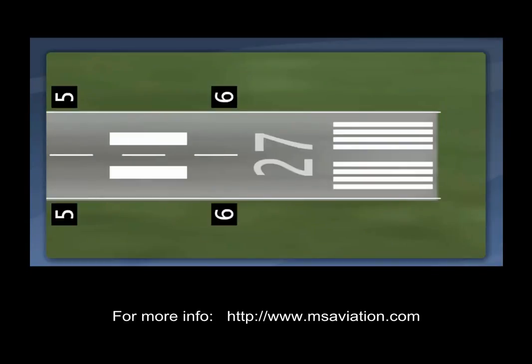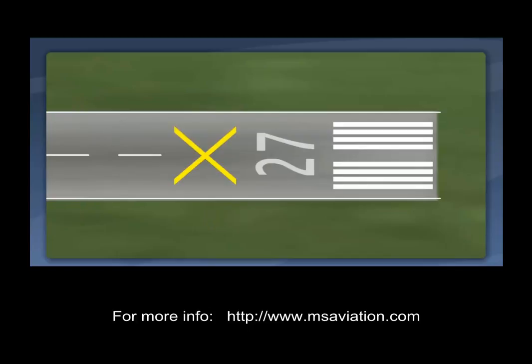This sequence shows several things. First, we see two runway remaining signs — one for 6,000 feet and one for 5,000 feet. In the last sequence we can see a big yellow X on the runway, which means that the runway is closed.